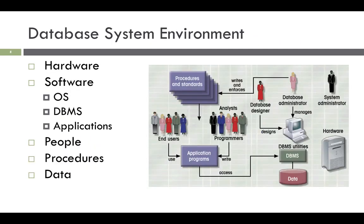Typically, the database system is divided into five main elements: hardware, software, people, procedures, and data. People are all users of the database system. Procedures are the rules for design and usage of the database system. Data is stored information in the database.